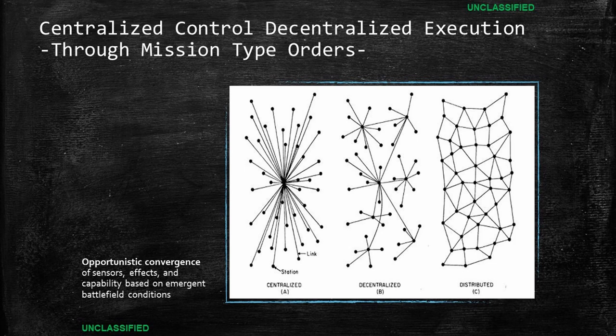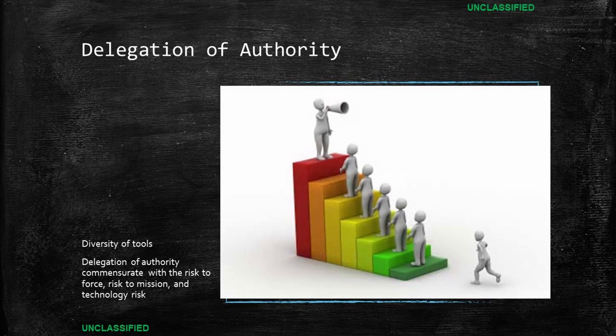The second core idea is Delegation of Authority. This is not intended to be only decision authority, but also authorities in the legal sense. Due to the character of our ongoing conflicts, the decision authority to utilize certain effects — or even something as simple as target engagement authority, TEA — has been retained at arguably arbitrarily high levels. To be effective against a peer or near-peer competitor, the joint force must have the ability to make decisions without having to 'mother may I' four or five echelons above.